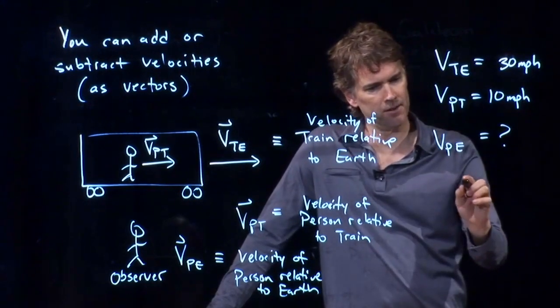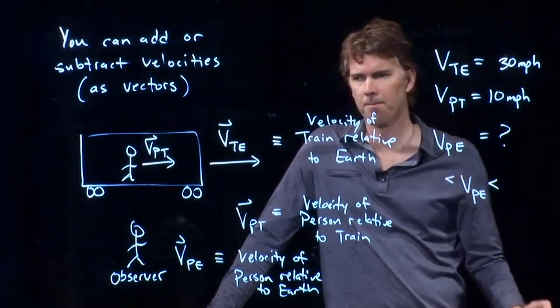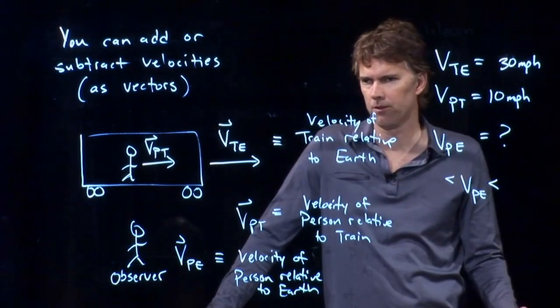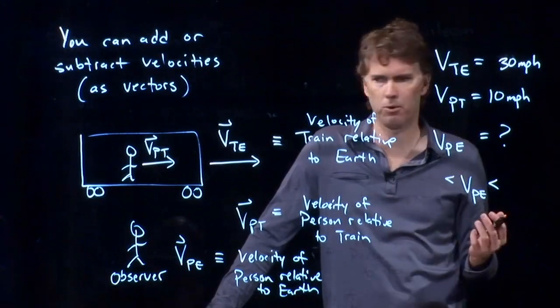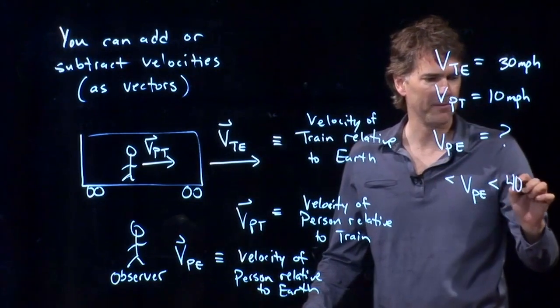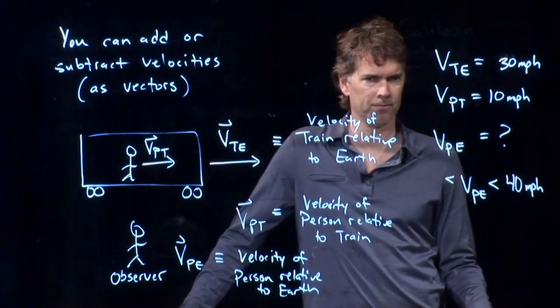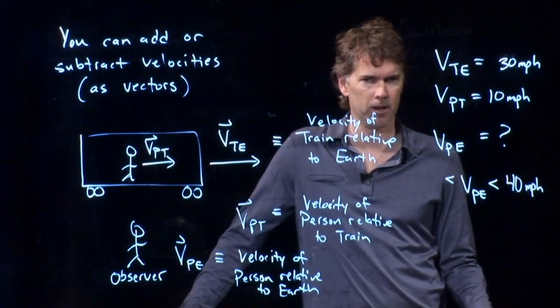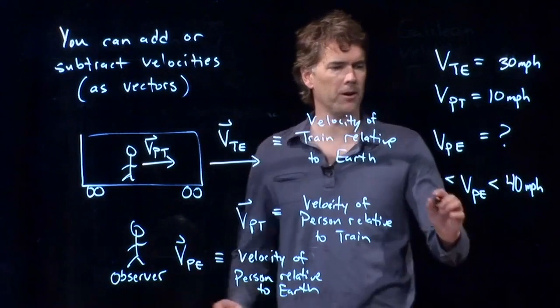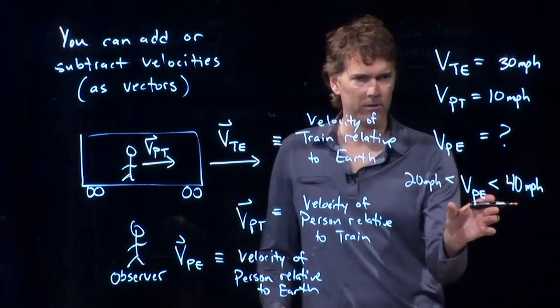And now we need to figure out V_PE. What is the biggest that V_PE could be? What's the biggest that V_PE could possibly be? We already said the answer to this, right? It's if you're walking in the same direction as the train's moving. The biggest it could be is 40. What about the smallest it could be? Anybody have a thought on that? Yeah, Ian? 20 miles per hour. 20 miles per hour.